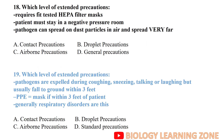Which level of extended precautions requires a fit-tested filter mask? The patient must be placed in a negative pressure room, because the pathogen can spread on dust particles in the air and spreads very well — this is airborne precautions.